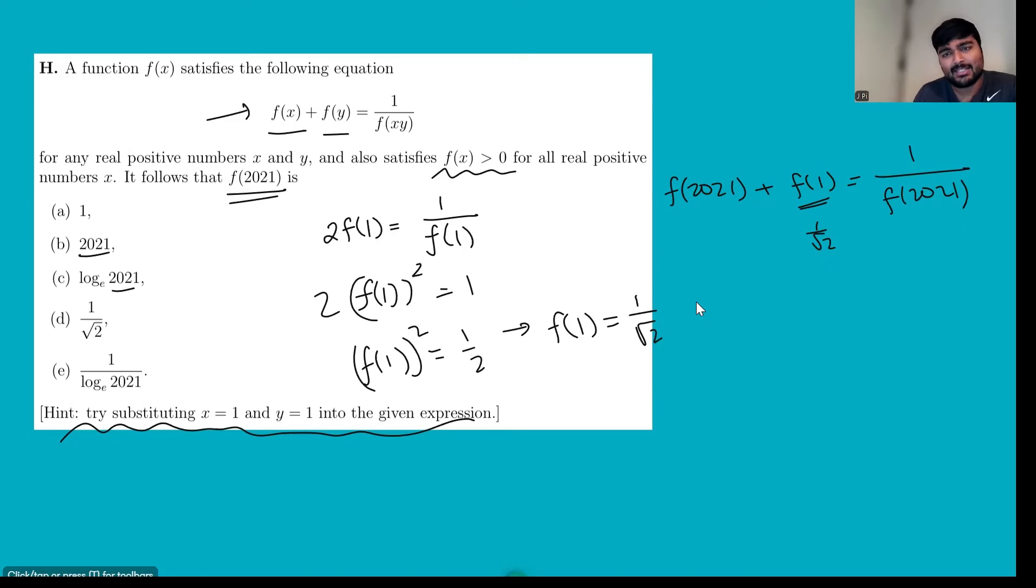Let's work out what this is. I'm going to call f(2021) something just so I don't have to keep writing it. Let's call it k. So we get k plus 1 over root 2 is 1 over k. Let's multiply by k. So k squared plus 1 over root 2 k equals 1, so minus 1 equals 0.